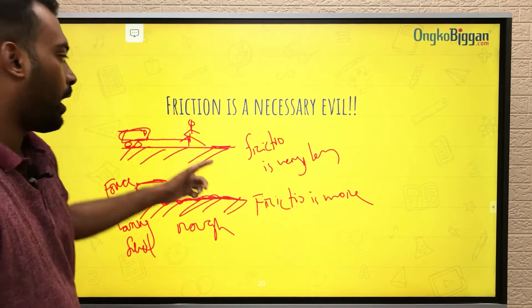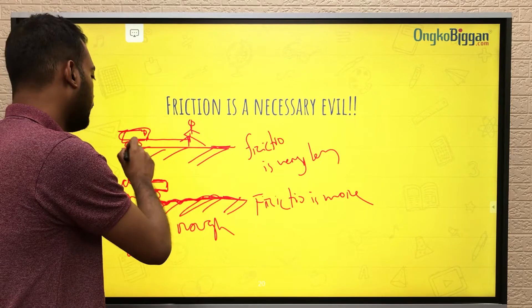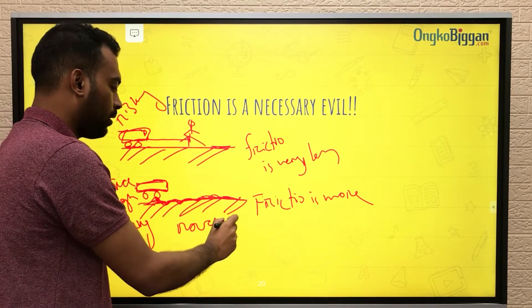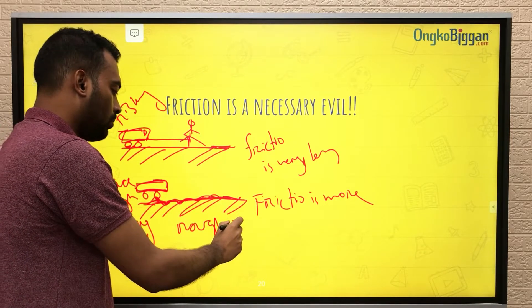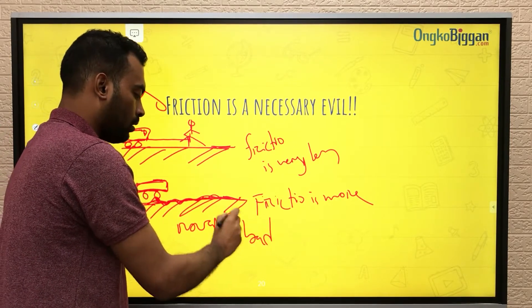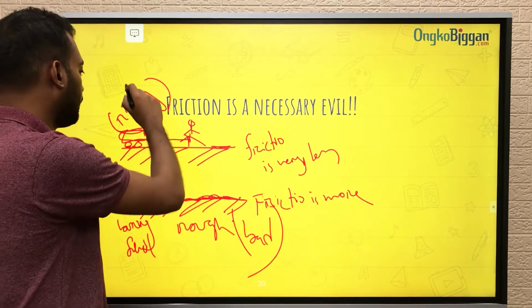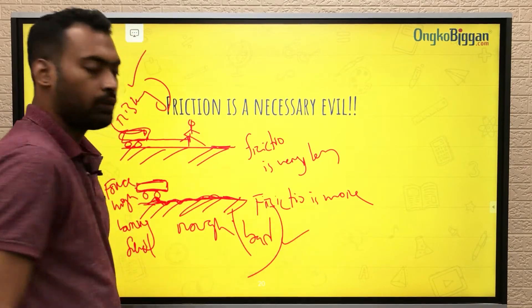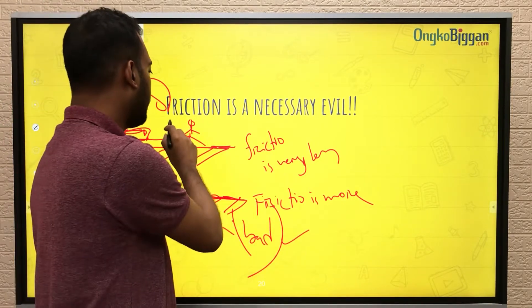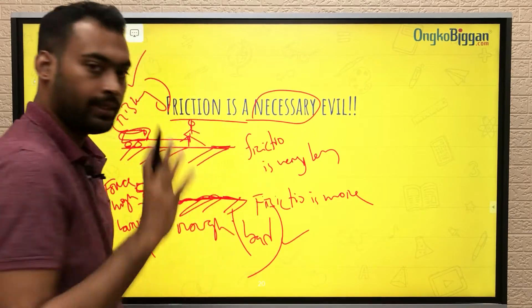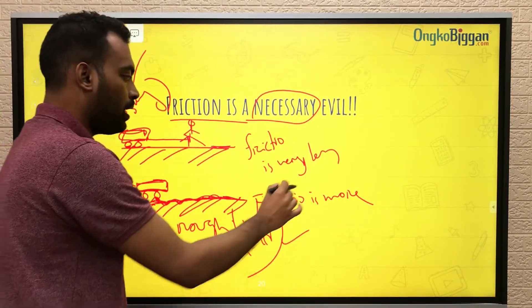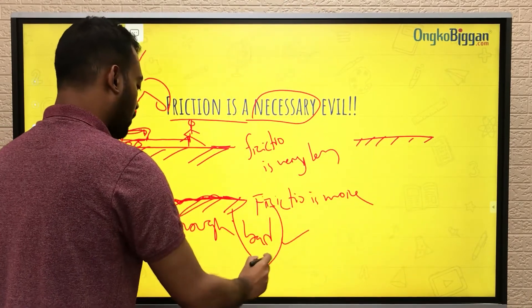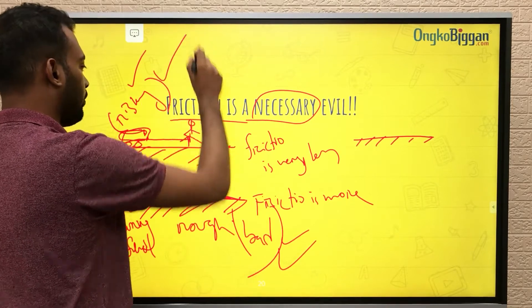So where friction is less, it is risky. Where friction is more, it is also inconvenient and bad. Less friction is risky, more friction is bad. So friction is necessary, but it should be at an optimum level — not too much, not too little.